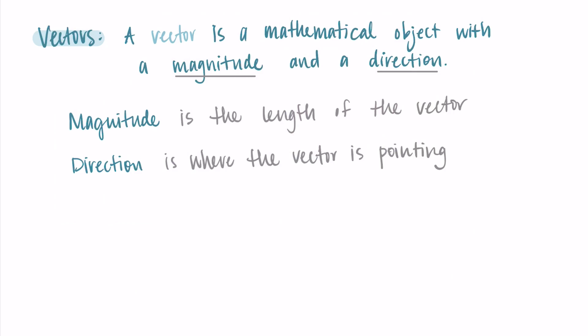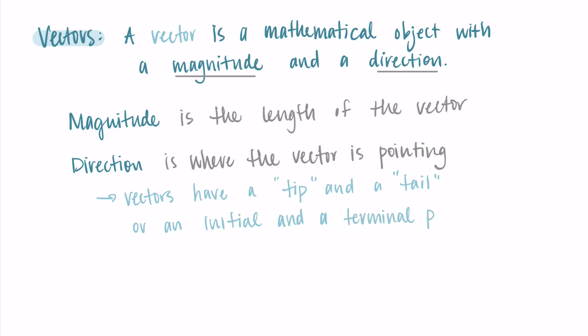We represent vectors with lines and arrows. The important thing is that vectors have a tip and a tail, meaning they have an initial point and a terminal point. They start at the tail and end at the tip. We use this to help us represent direction.